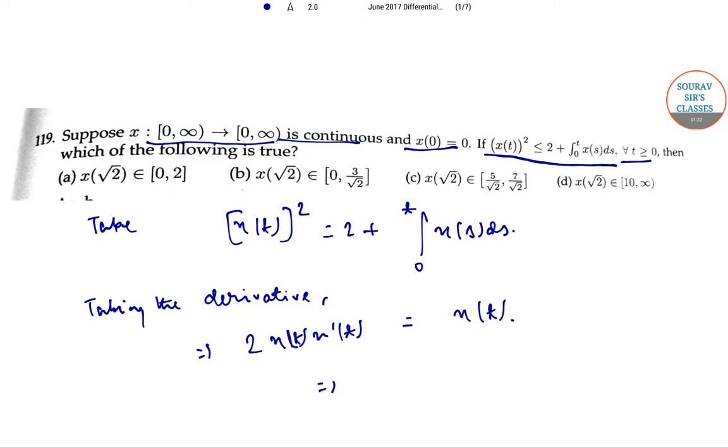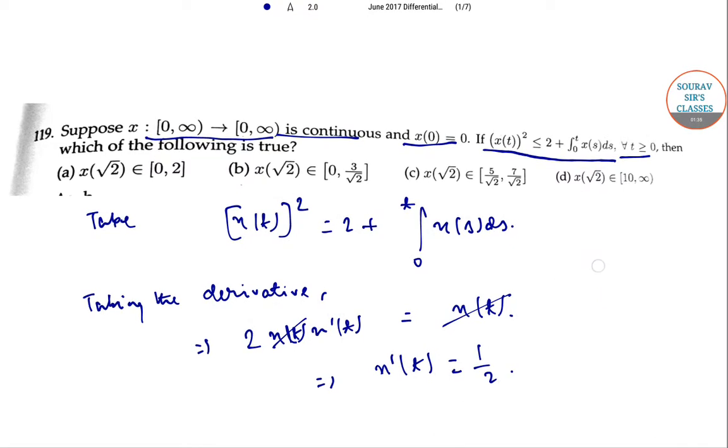And so, from here, x(t) cancels out and we get x'(t) to be equal to half.